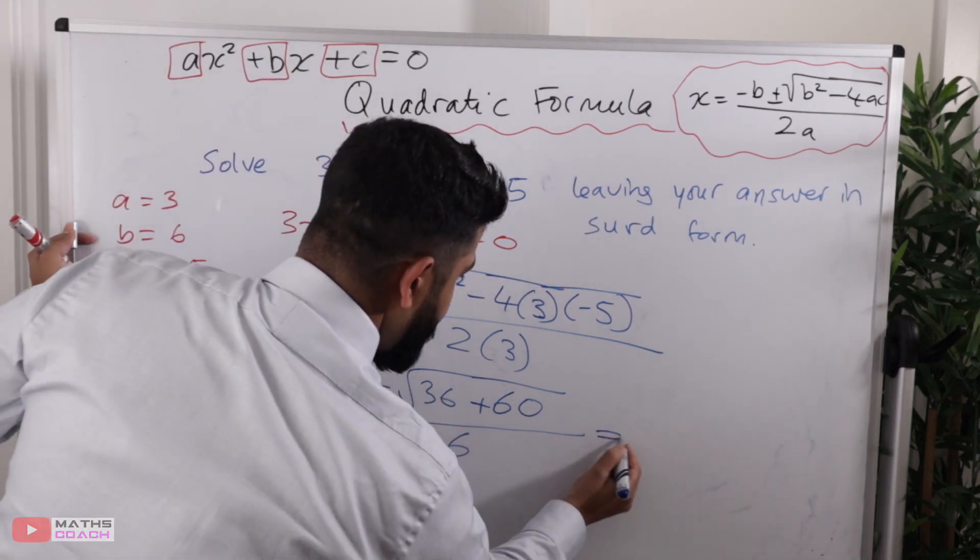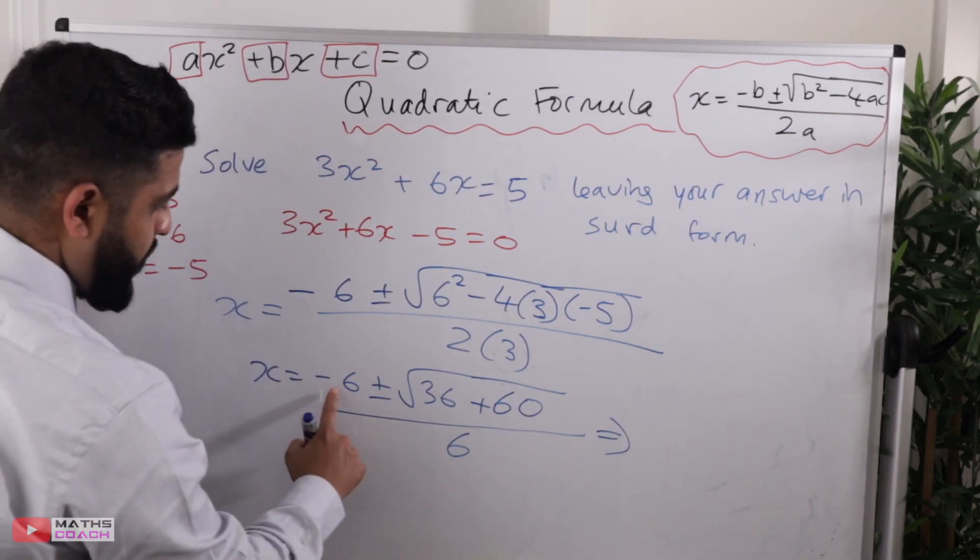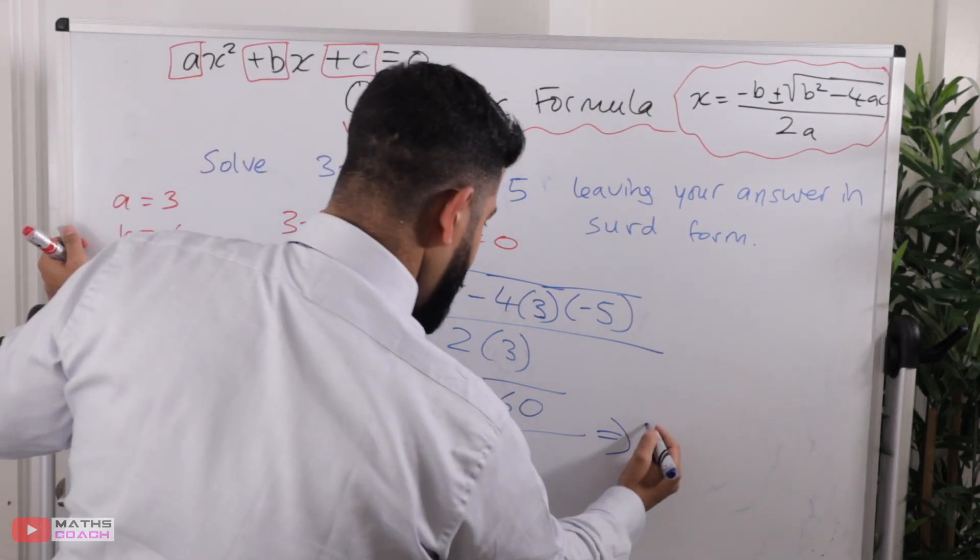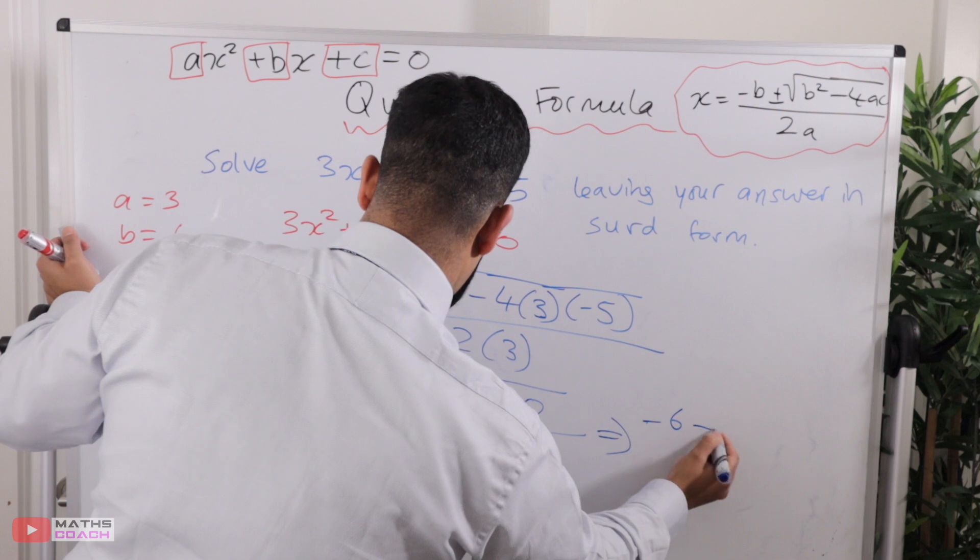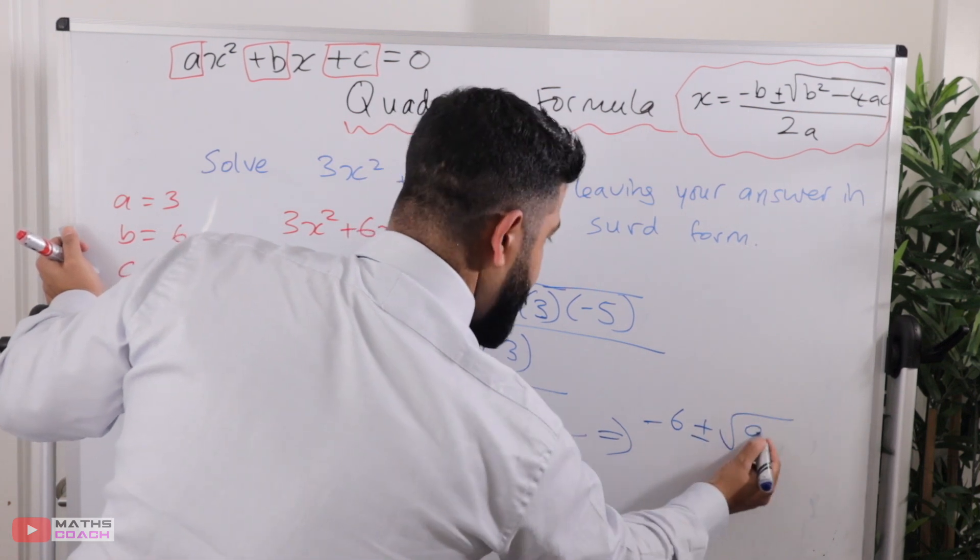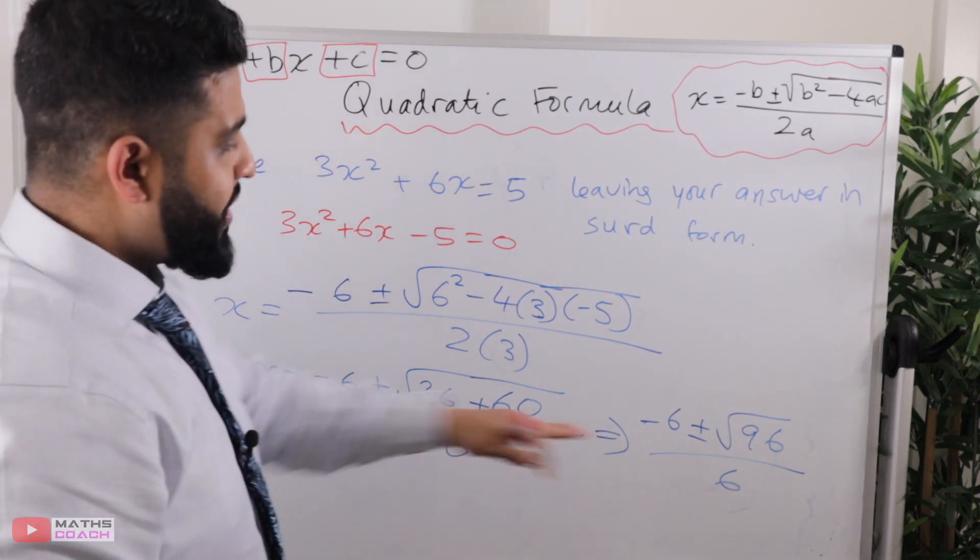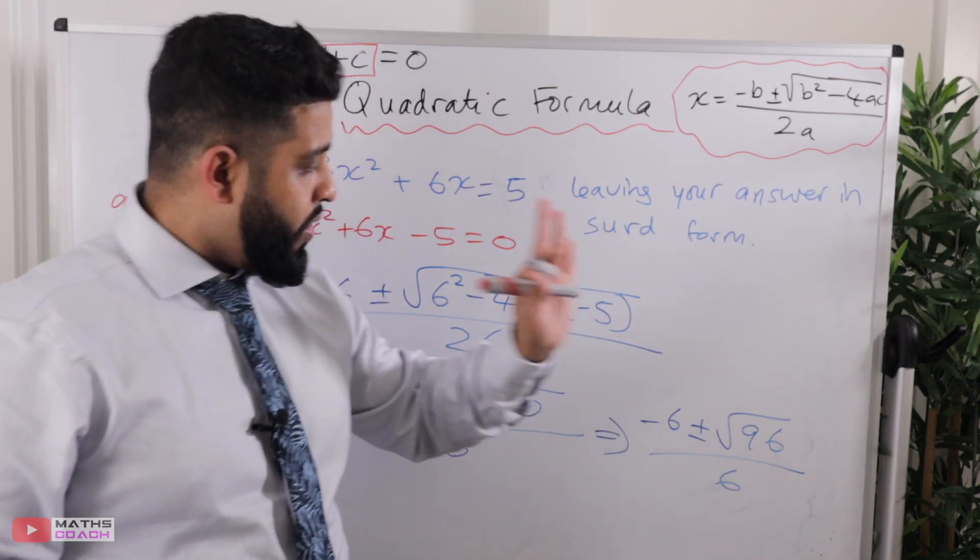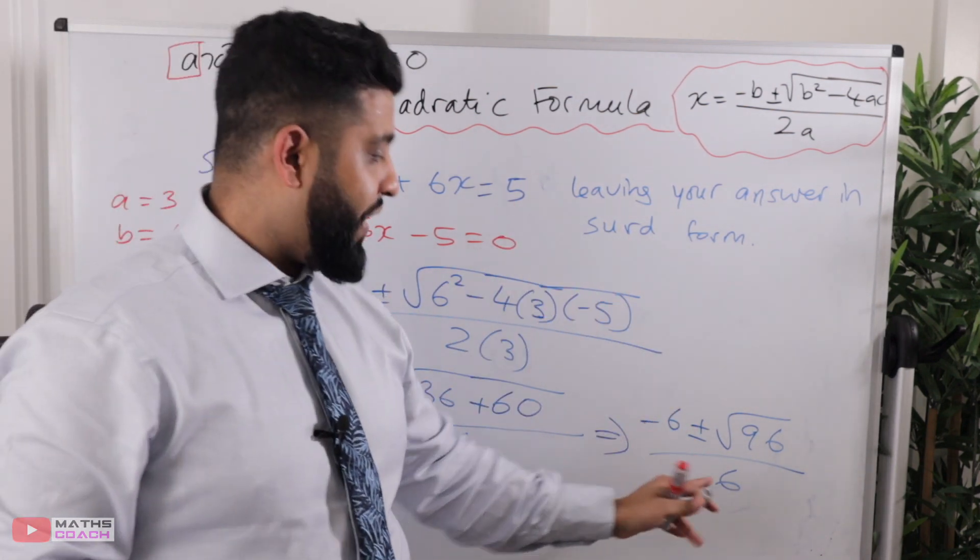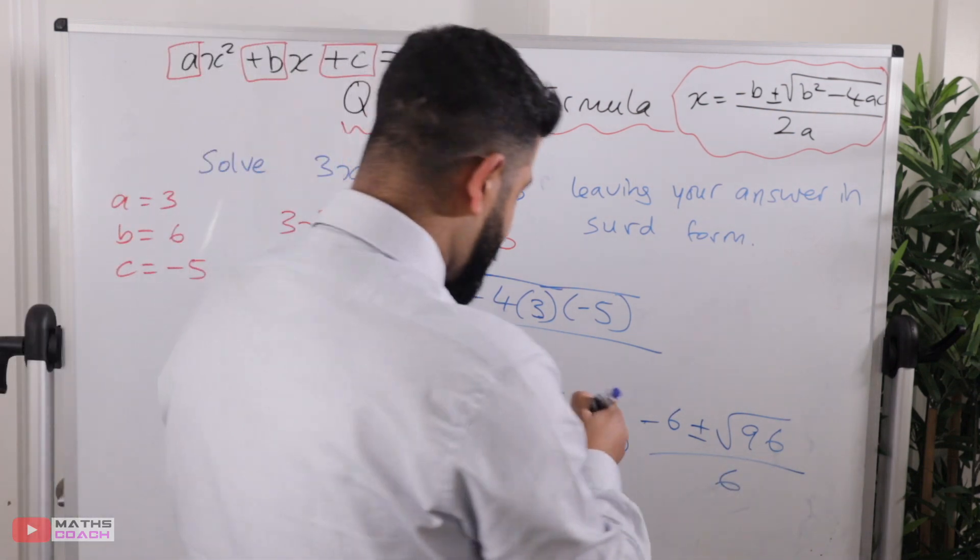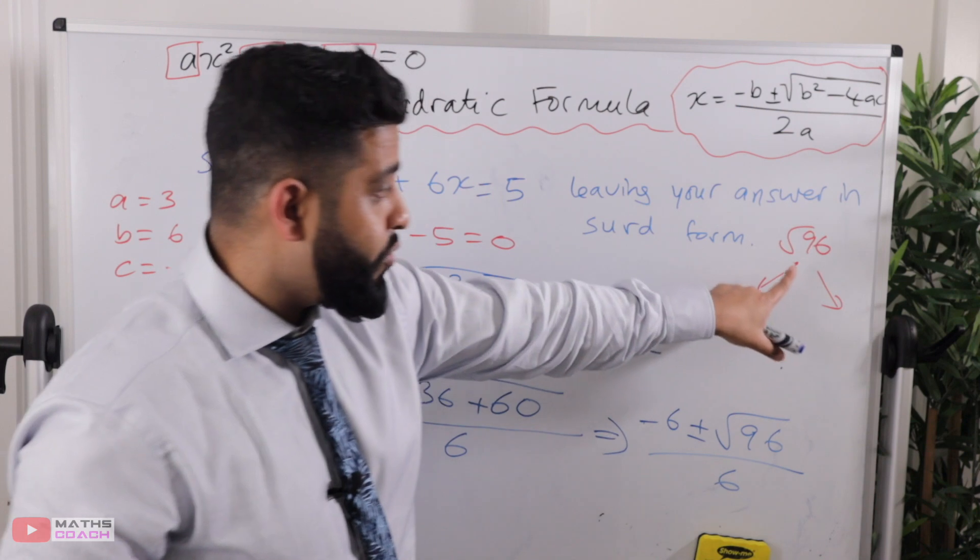After that, I'm just going to continue this way. We're now going to add 36 and 60, which is minus 6 plus or minus 96 over 6. Is this our final answer? No, it's not, because we haven't simplified it. You see that root 96? We can break it down. We can break down that surd. We're going to break up root 96.